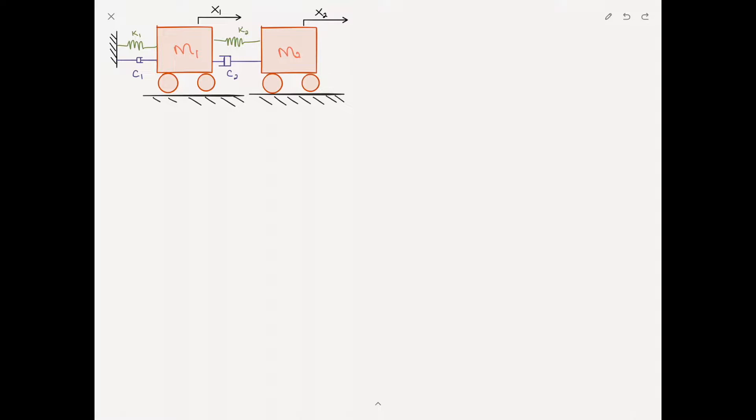I've had several requests to show how to incorporate damping into equations of motion. So I'll revisit this two degree of freedom system problem, and this time I'll add dampers C1 and C2 between the masses.